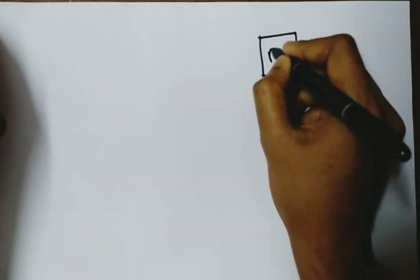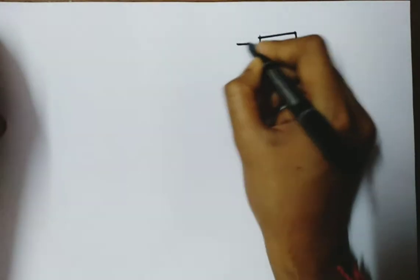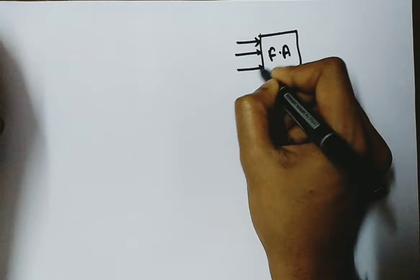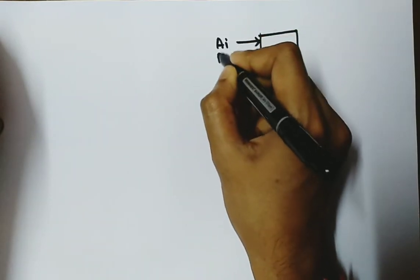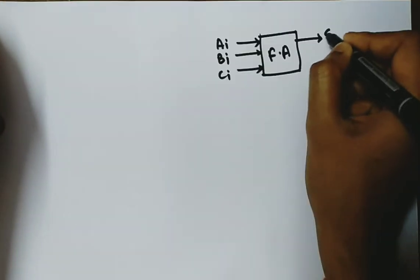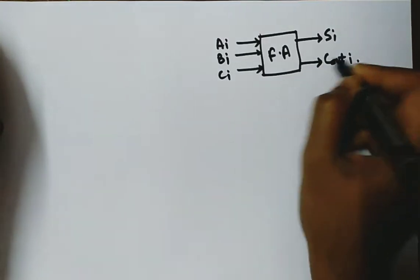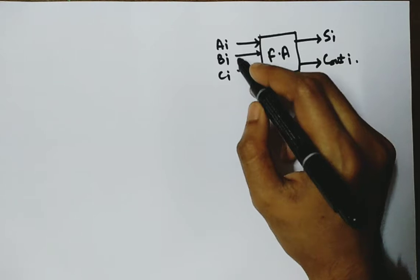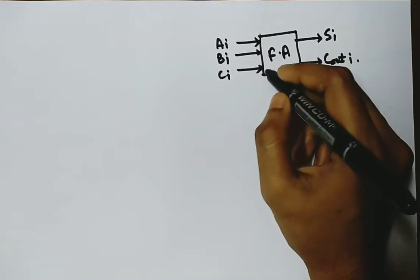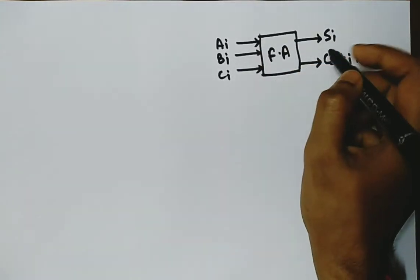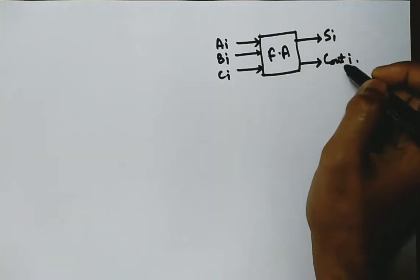Hello everyone, this class today is about carry look-ahead adder. First of all, we will see structure of a full adder. It has two inputs Ai and Bi and an input carry Ci, and this is the output sum and output carry.